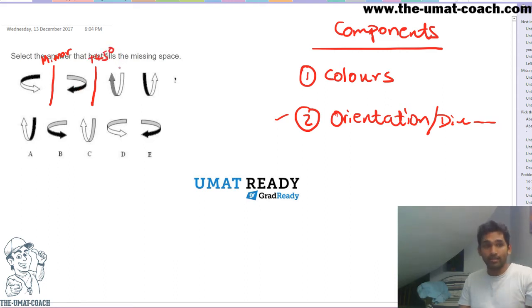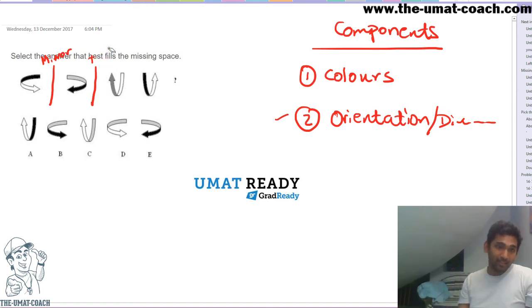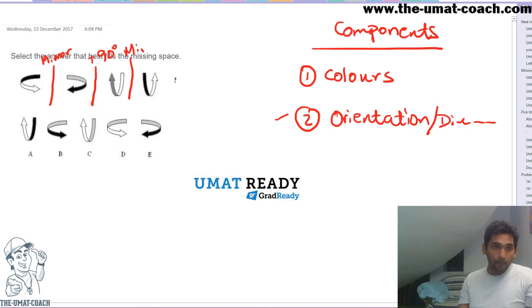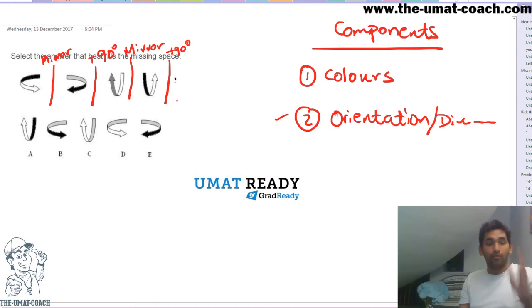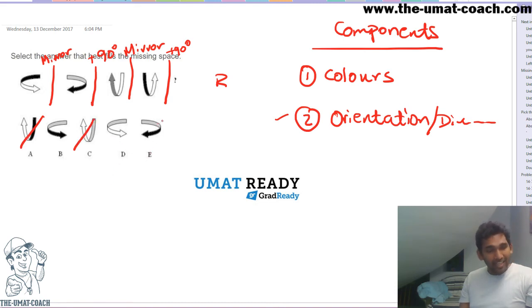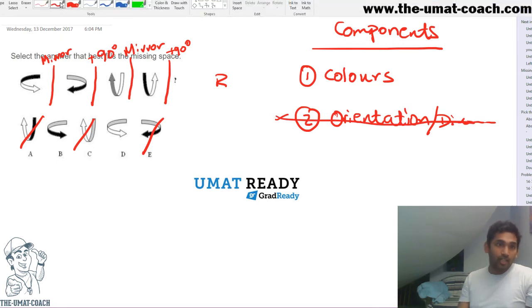Actually, that's 90 degrees — my bad, 90 degrees. So from 3 to 4 we have the whole mirror movement again. So naturally this last one should be a plus 90 degrees movement, meaning from facing up it's going to face to the right. That rules out A, C, and E. Now we've got this down pat, let's focus on the colors.